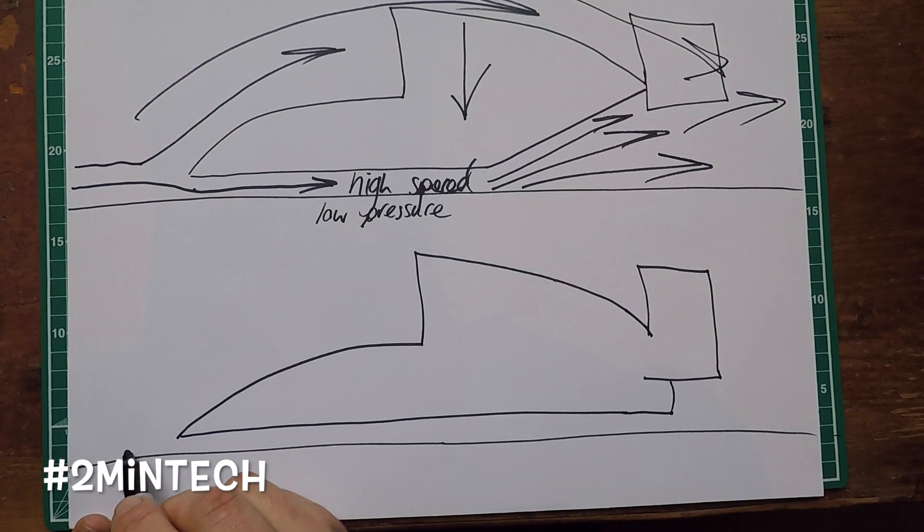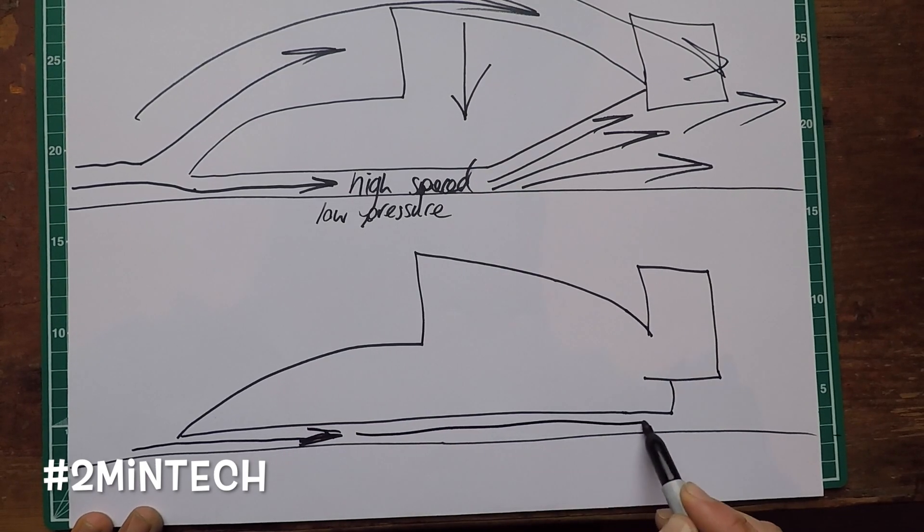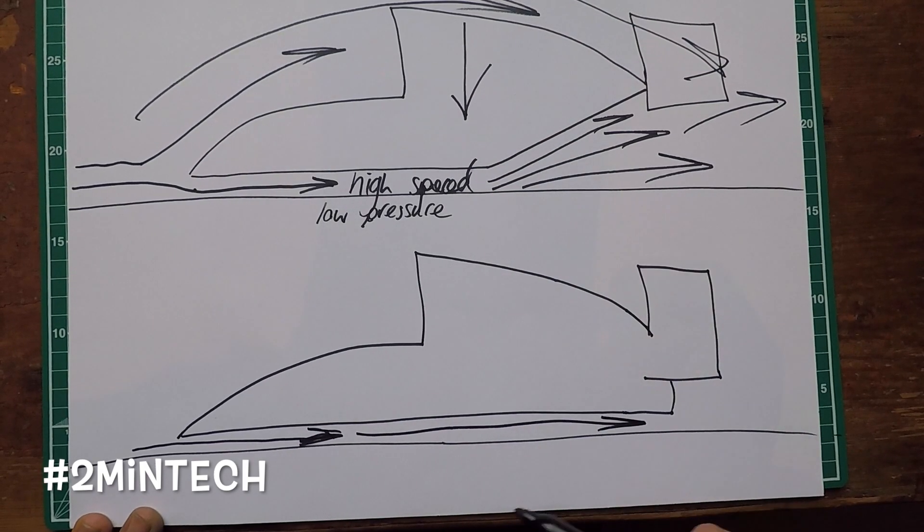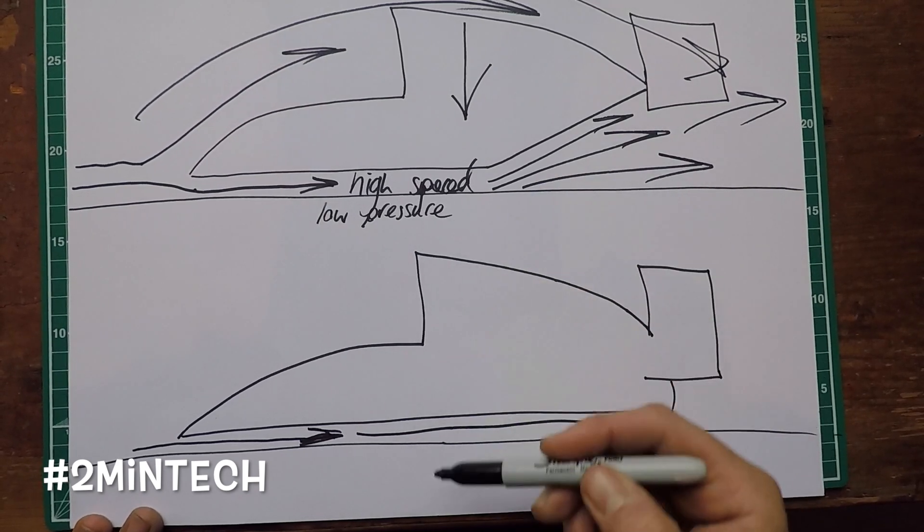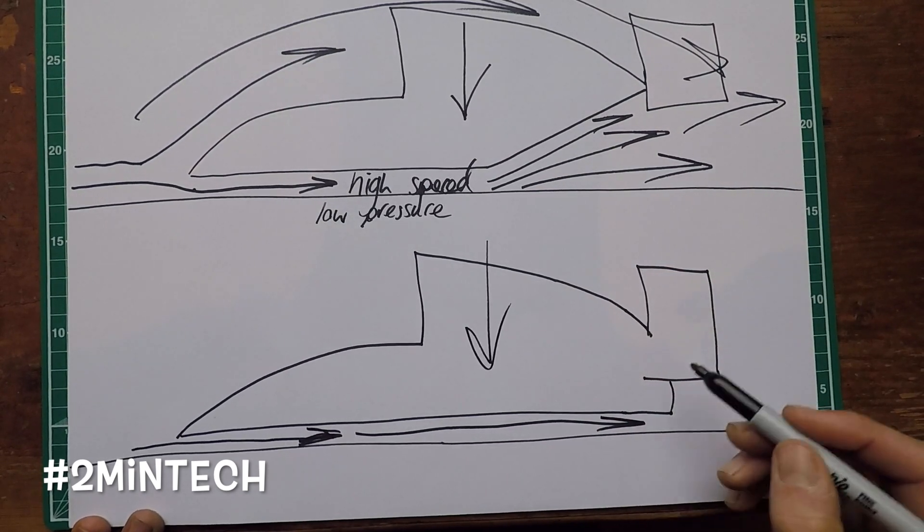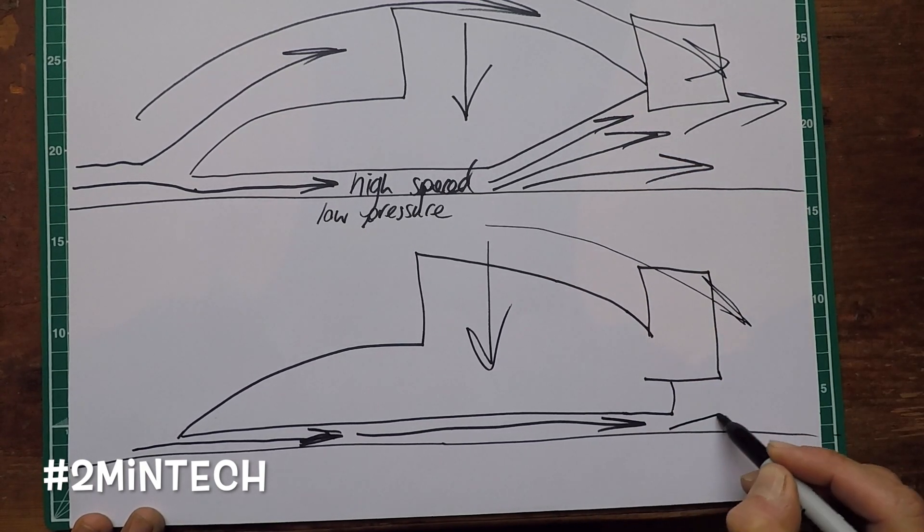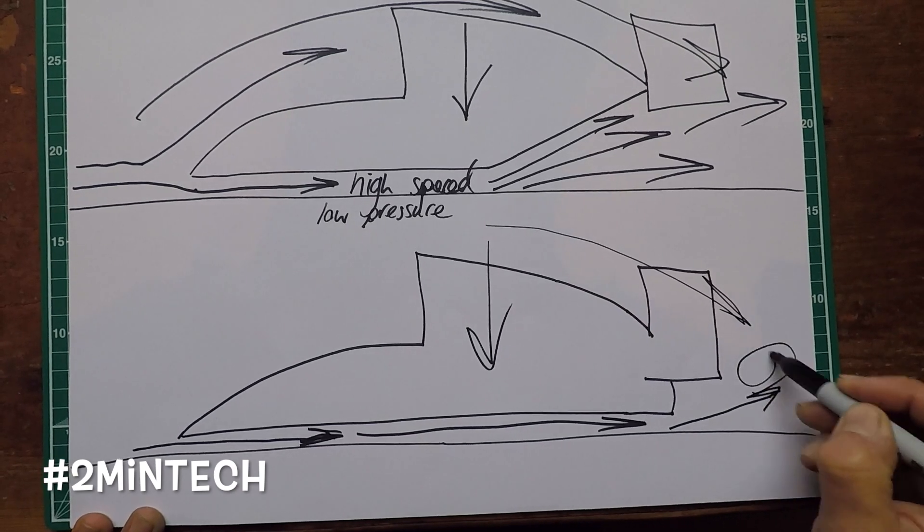If we didn't have that there, this very high speed airflow running beneath the car would pass all the way through still at very high speed, still at low pressure. We'd still get a pressure differential, we'd still get some downforce, but at the back here where we don't have the expansion gap, the higher pressure above would start to mix with the low pressure beneath in a really turbulent manner.